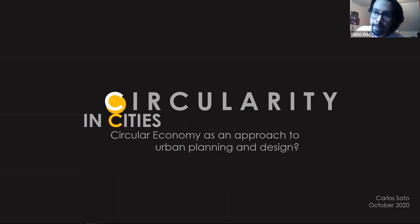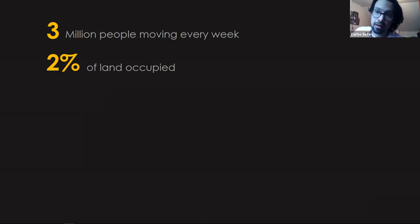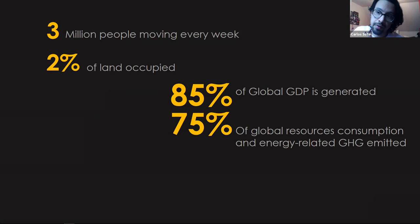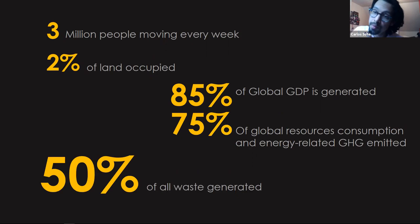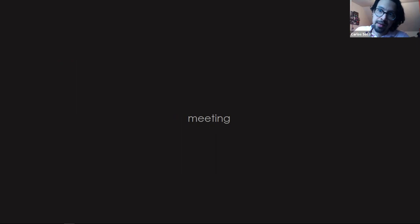Let's look at some numbers. We have some global facts: three million people are moving to cities every week according to the UN, and only two percent of the land of the earth is occupied by cities, but this is the place where eighty percent of GDP is produced and seventy percent of global resource consumption happens in urban areas, along with the same amount of energy-related greenhouse gases. Half of the population lives in urban areas and fifty percent of waste generated leaks in urban areas, projected to grow to seventy percent by 2050. For the first time ever, the financial world is meeting environmental issues.